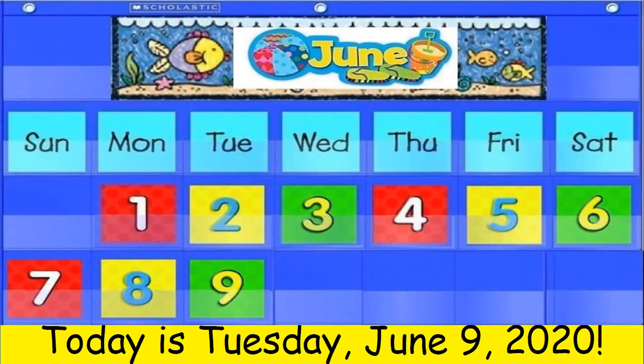January, February, March, and April, May, June, July, and August, September, October, November, December. These are the months of the year. So our month begins with the letter J, then a U, then an N, and then an E to spell the month of June.